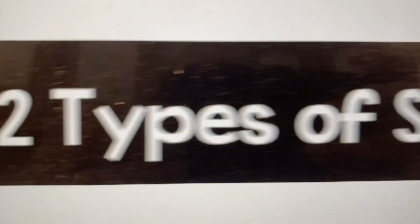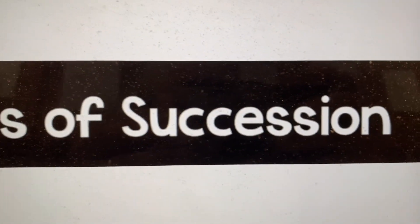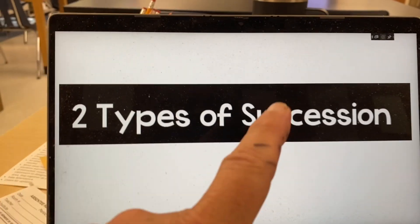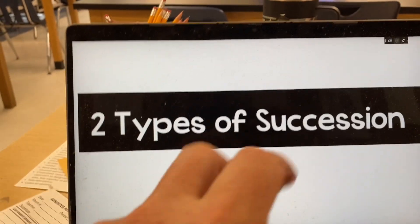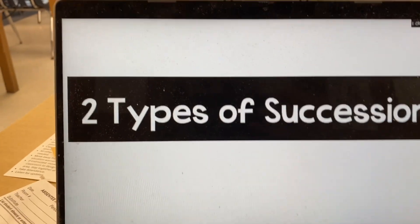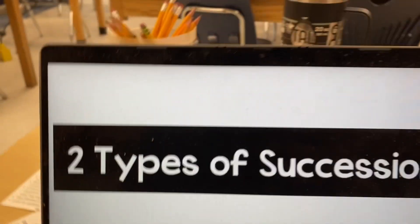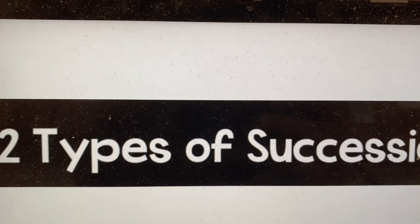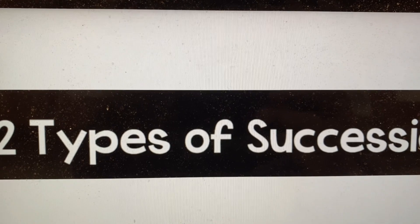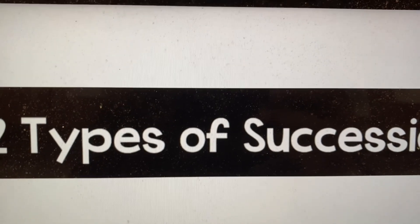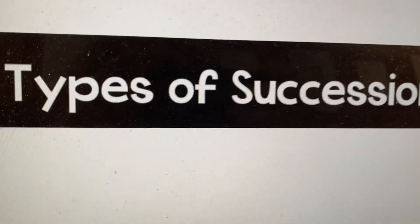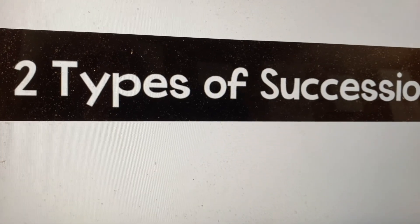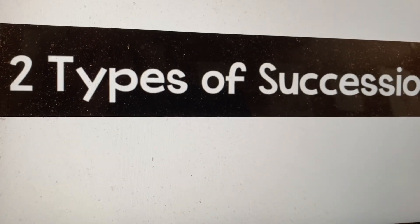Two types of succession. It's all the same thing — it's the change in an ecosystem until you get to a climax community. So changes that occur in a regular sequence in an ecosystem until you get to the climax community is what we call succession.